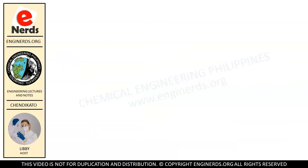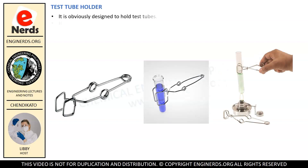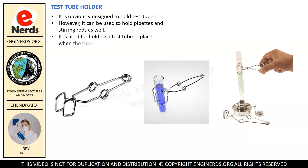Now let me show you the test tube holder. It is obviously designed to hold test tubes. However, it can also be used to hold pipettes and stirring rods as well. It is used for holding a test tube in place when the tube is hot or should not be touched. As you can see in the photograph, the test tube holder is used while the liquid inside the test tube is being heated. You will find it really useful in holding test tubes while they are hot or when they are not intended to be touched by bare hands.